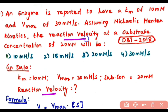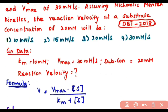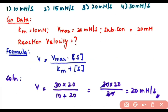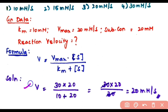They are asking for reaction velocity at a substrate concentration of 20 millimolar. We know the Michaelis-Menten equation is: v = (Vmax × S) / (Km + S). To calculate reaction velocity, we just substitute all the given data into this formula to get the answer directly.